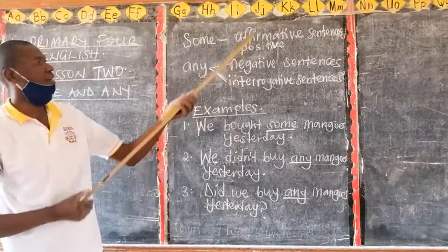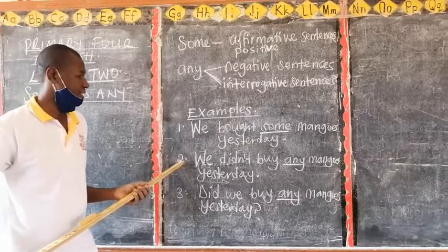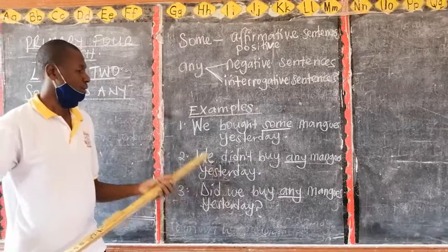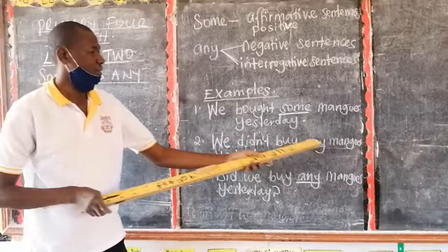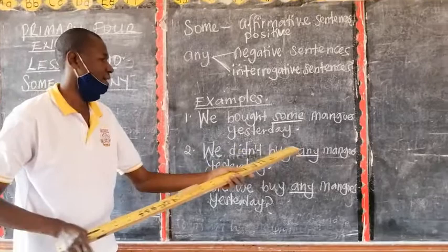Number three: We didn't buy any mangoes yesterday. This sentence is in negative form because of the word didn't. So when we have a negative sentence, it is supposed to use the word any. We didn't buy any mangoes yesterday.